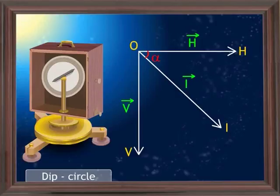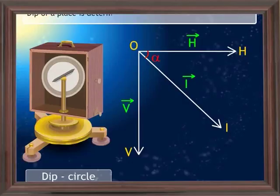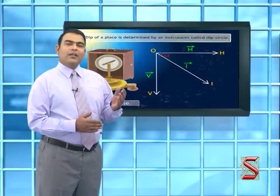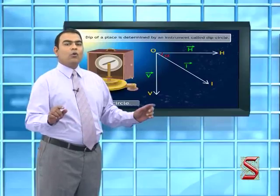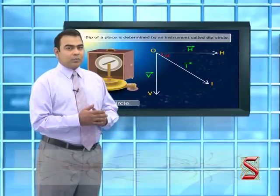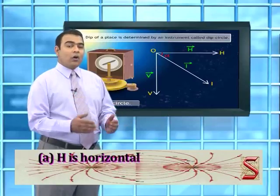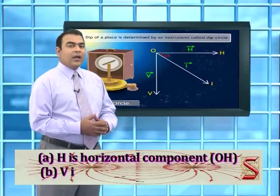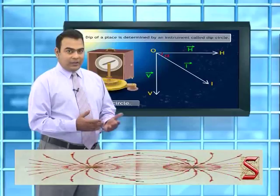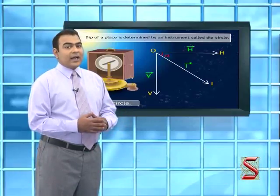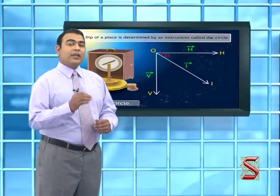The resultant intensity of the earth's magnetic field is represented by OI. The angle HOI represents the dip at a place, denoted by alpha. Dip is determined by an instrument called a dip circle. The resultant intensity I can be resolved into two components: H, the horizontal component along OH, and V, the vertical component along OV. H is also considered one of the elements of terrestrial magnetism.